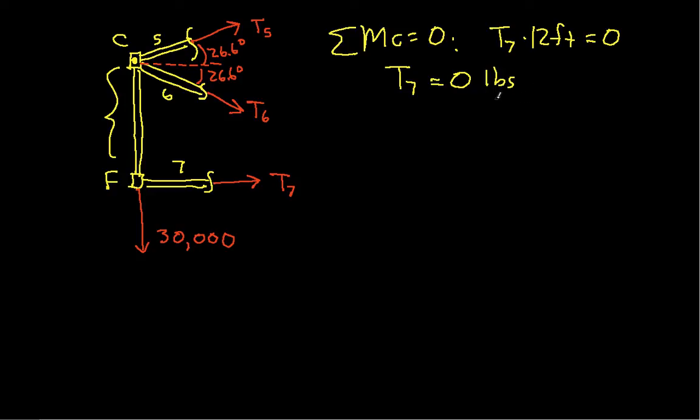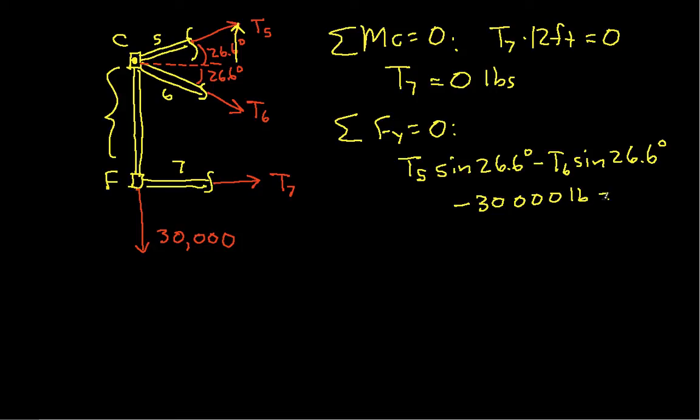Okay, let's then sum the forces in the Y direction. And we have that T5 sine 26.6 degrees, that's this one going up, minus T6 sine 26.6 degrees, minus 30,000 is equal to 0.